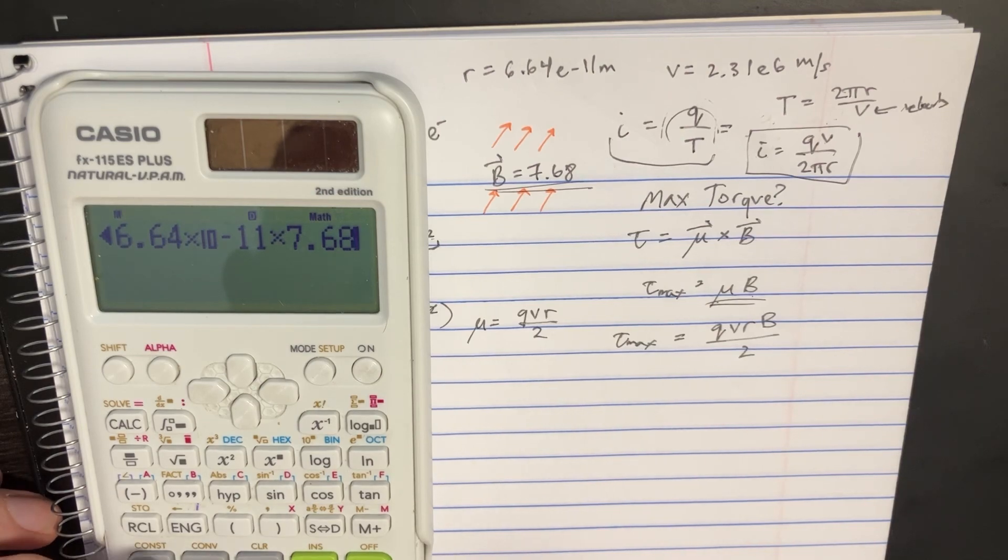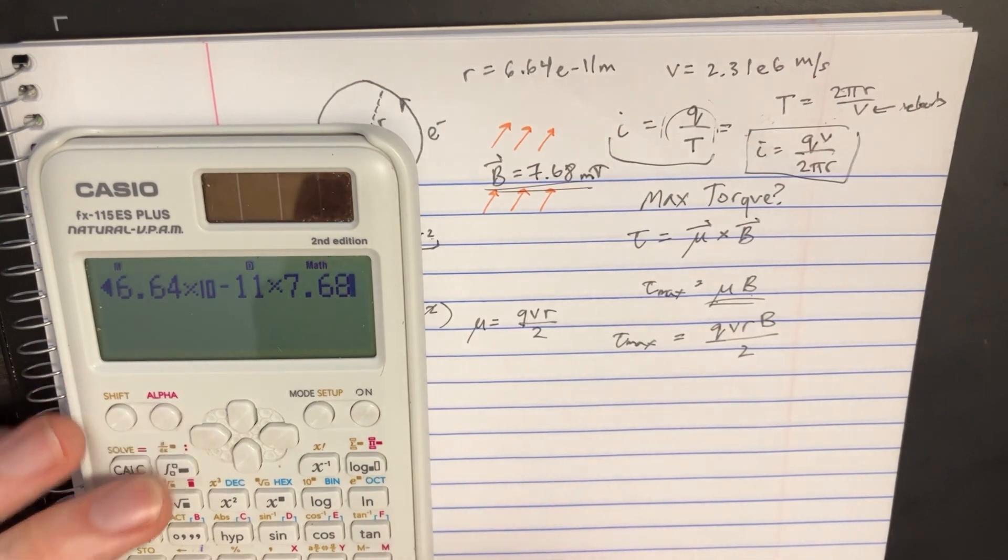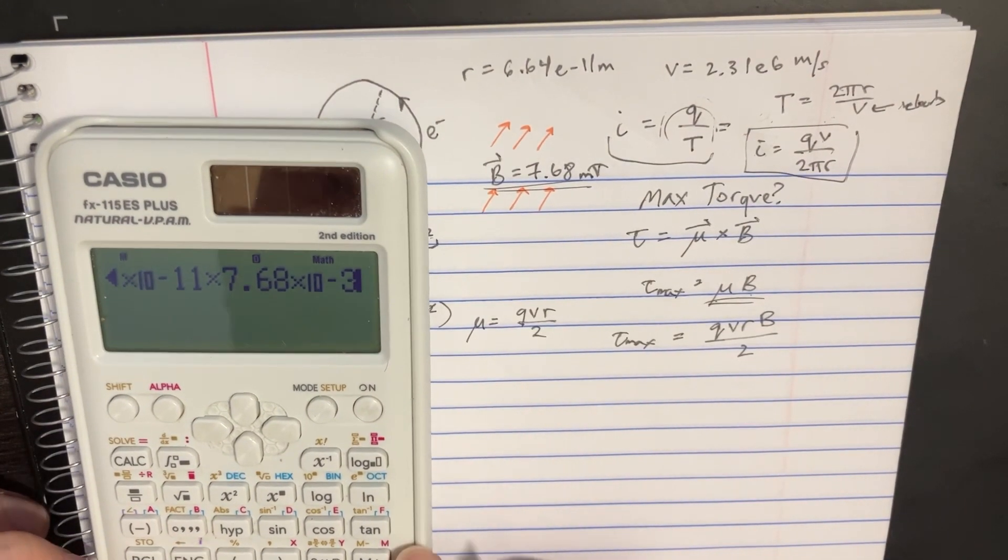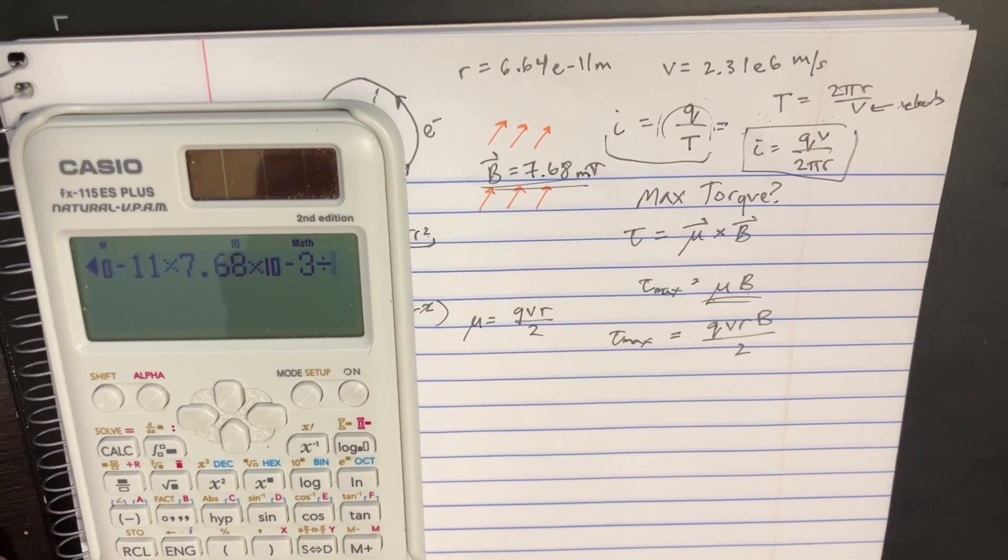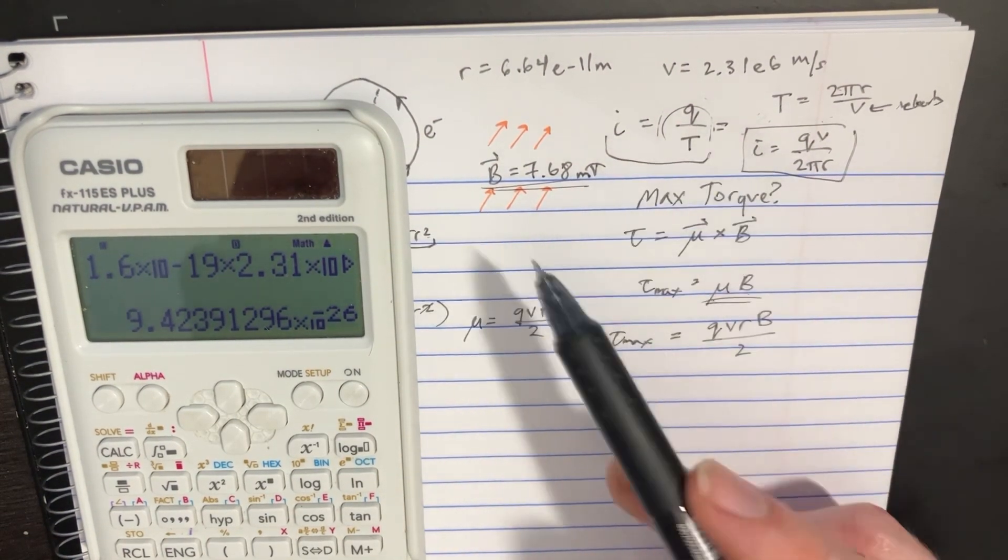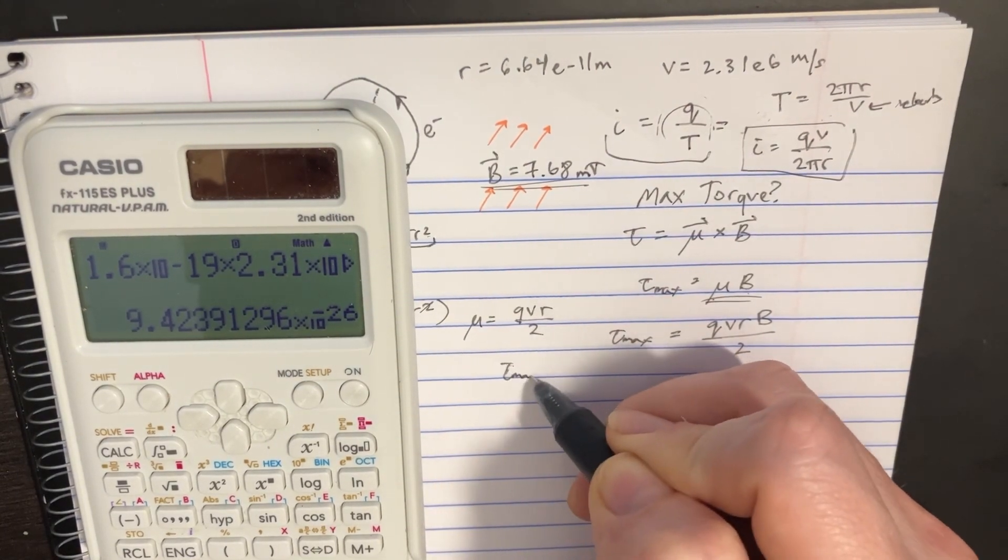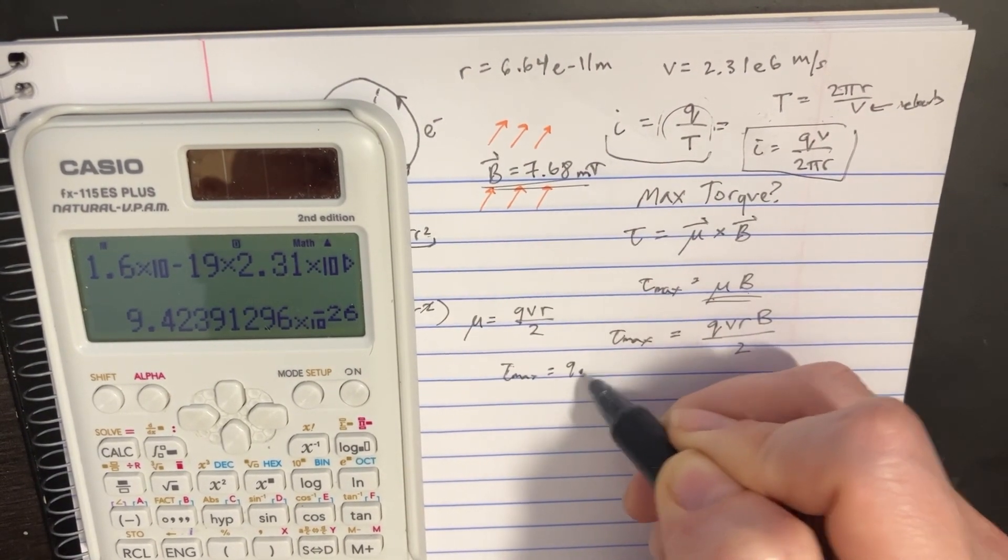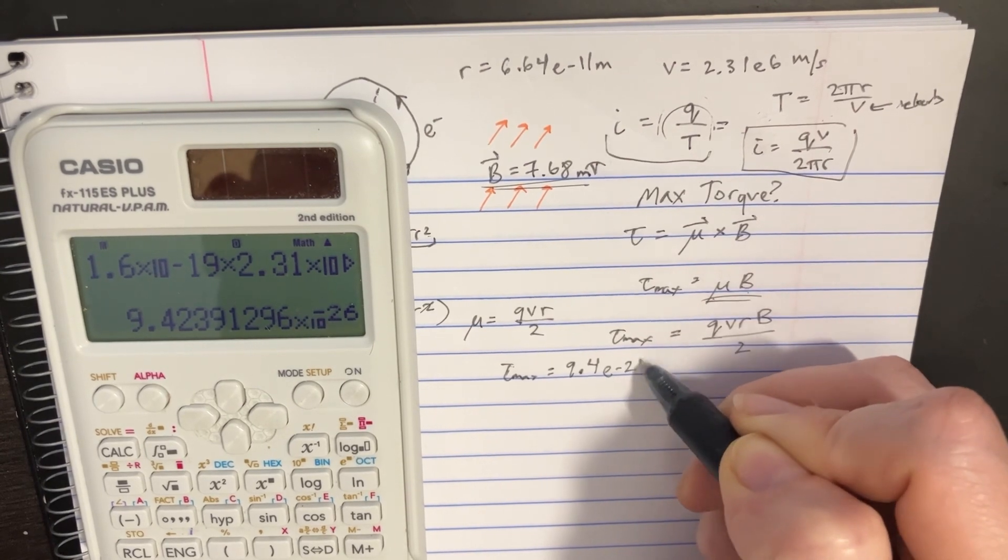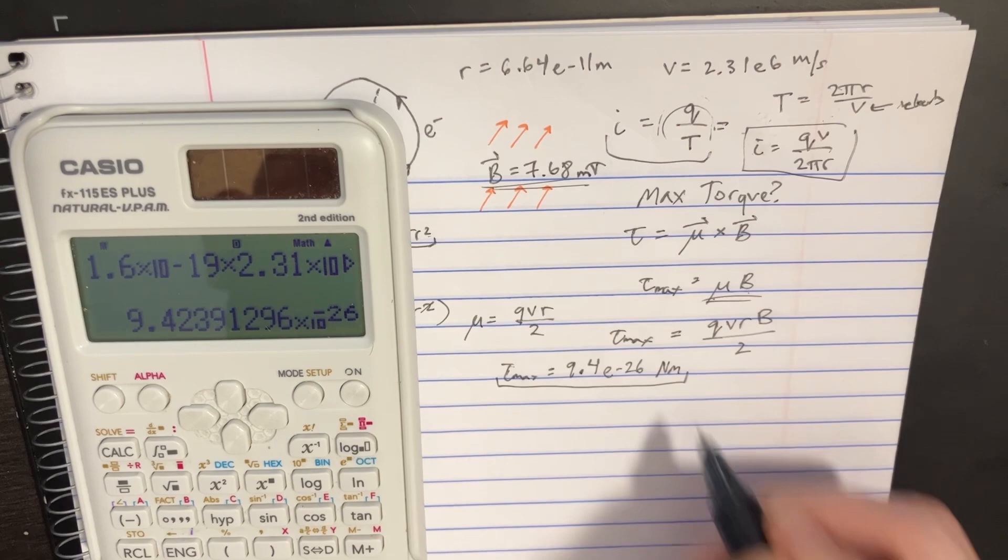B is 7.68 milliteslas, so that's 10^-3. We divide the whole thing by 2. We're looking for the magnitude, so we get tau max equals 9.4 × 10^-26 newton meters.